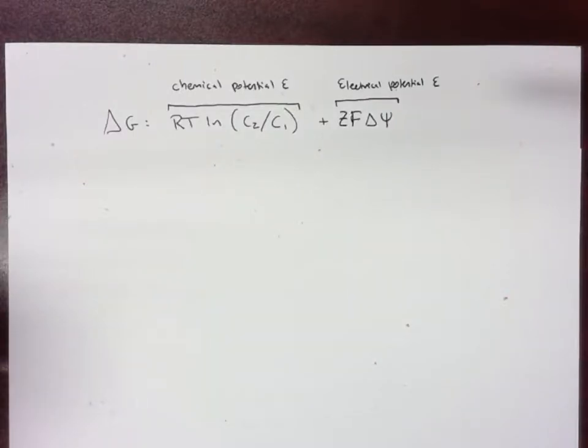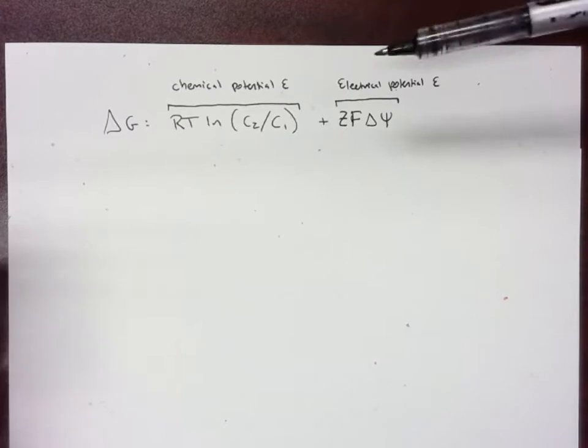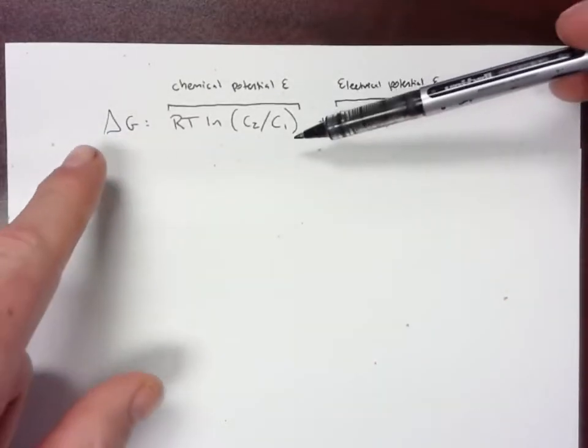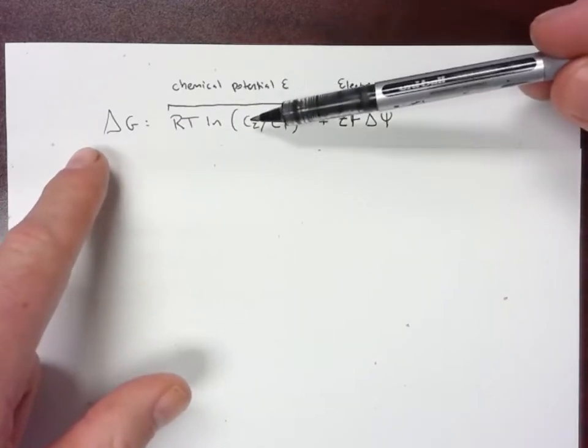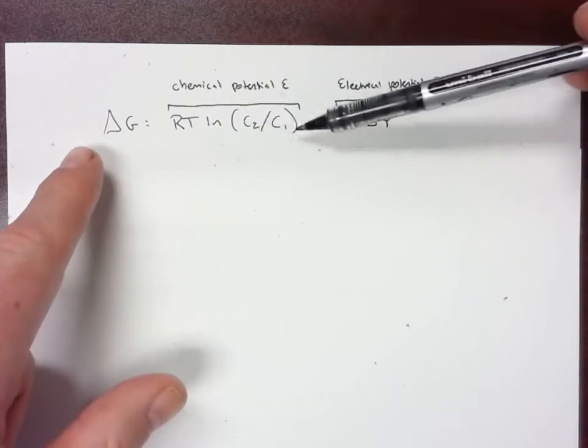Okay, in this video I'm going to explain the energetics of the proton motive force and we use this equation here to explain this. So it's ΔG equals RT natural log of C₂ over C₁.